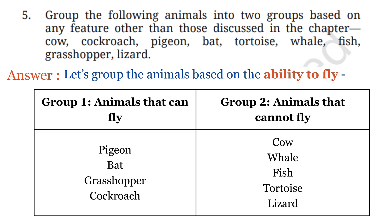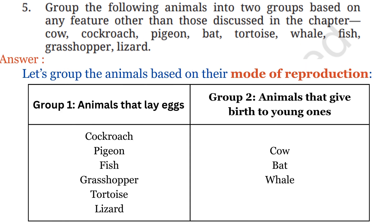Group 2 — animals that cannot fly: cow, whale, fish, tortoise, lizard. These animals do not have wings and cannot fly. Now let's group the animals based on their mode of reproduction. Group 1 — animals that lay eggs: cockroach, pigeon, fish, grasshopper, tortoise, and lizard. Group 2 — animals that give birth to young ones: cow, bat, and whale.